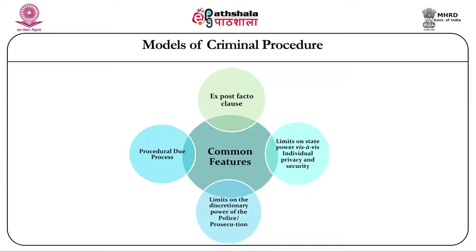The second commonality is that both systems acknowledge limitations on the discretionary powers of the police and prosecution. When a conduct has been defined as a crime by the legislature and a particular punishment is prescribed, the participants in the criminal procedure — the police and the prosecution — have limited discretion. They have to treat that particular act as a crime and do whatever is prescribed by the law. They must perform their roles when it appears that a crime has been committed.